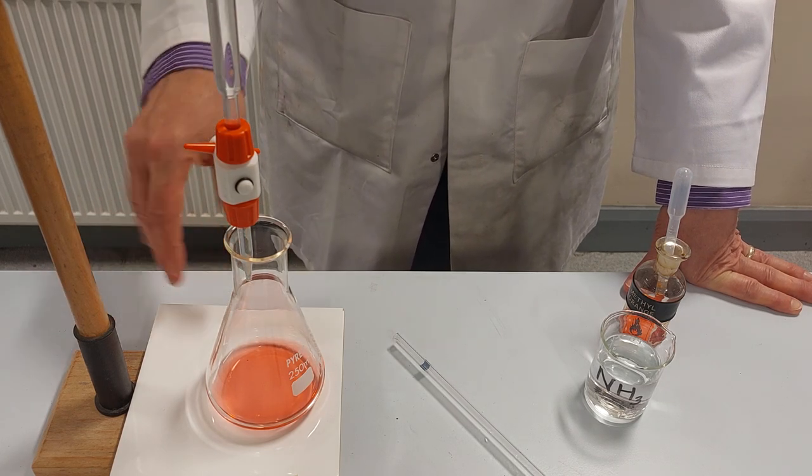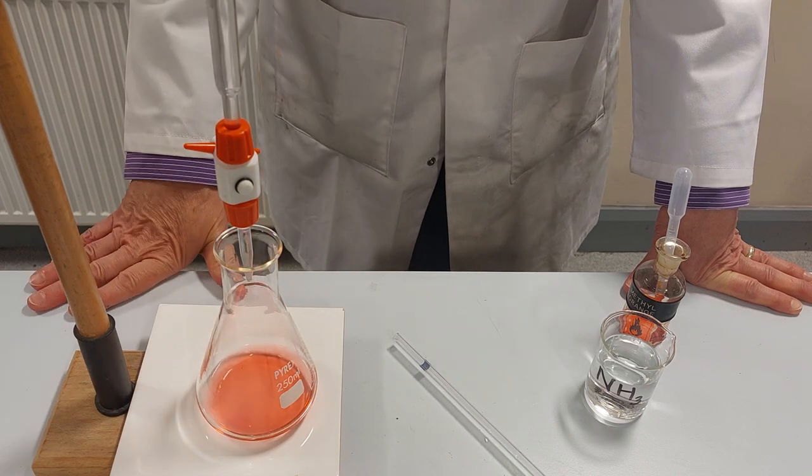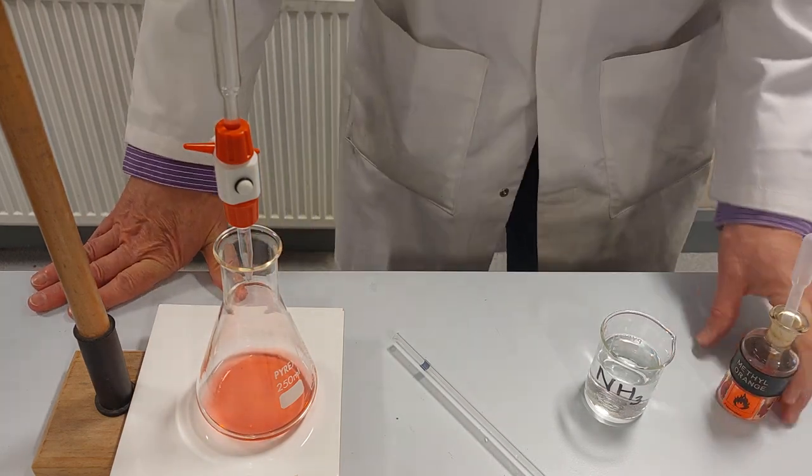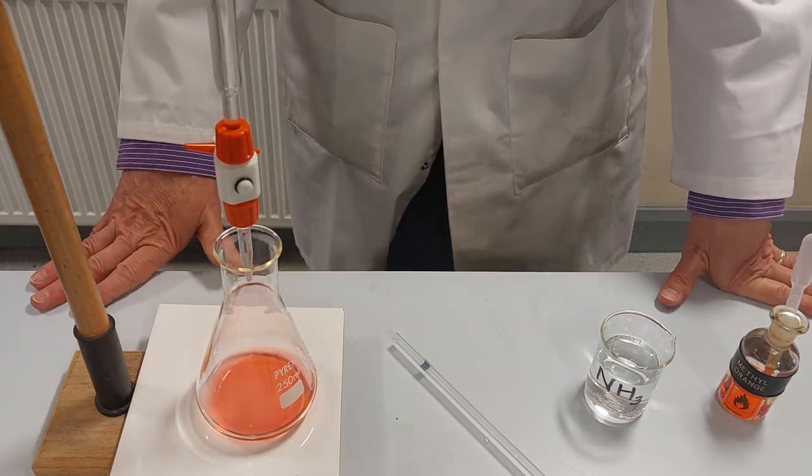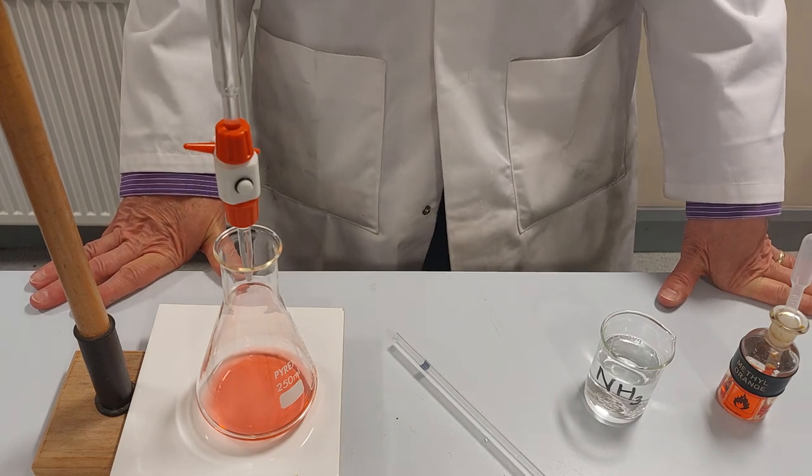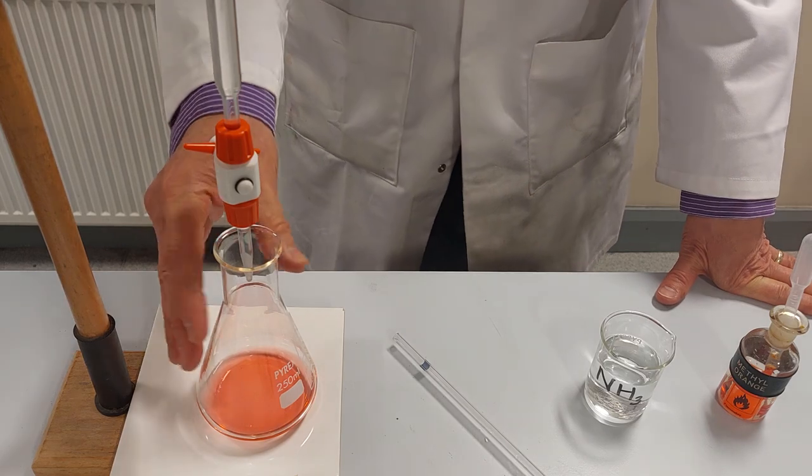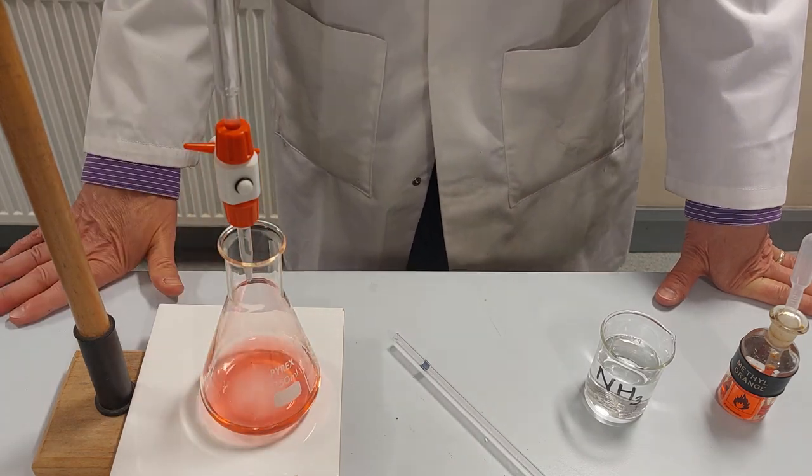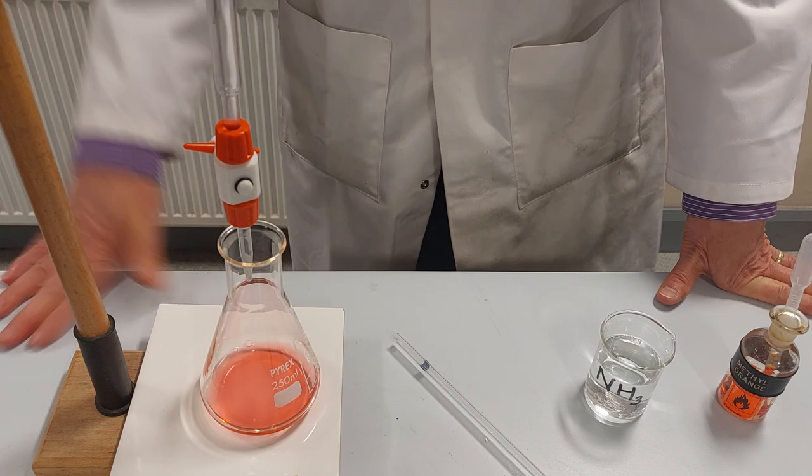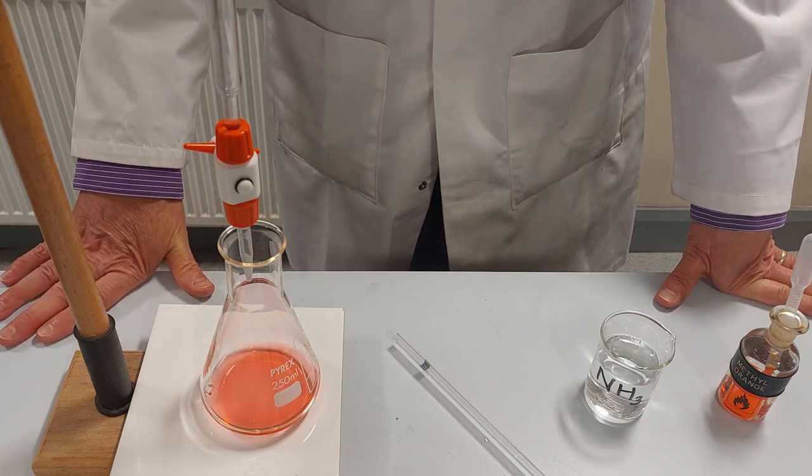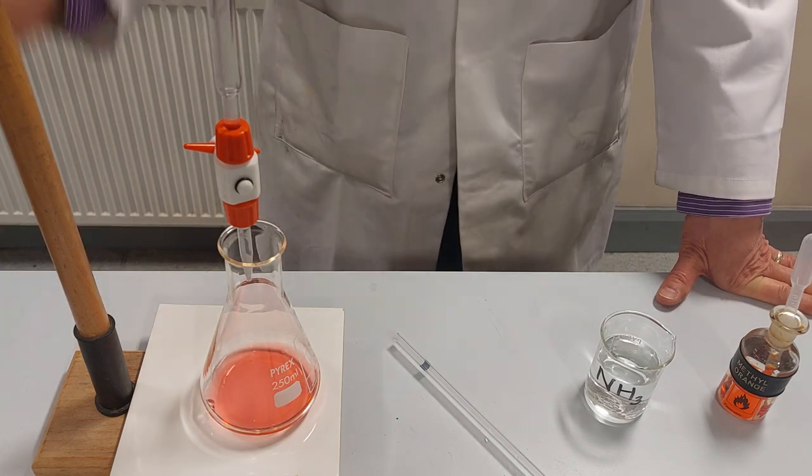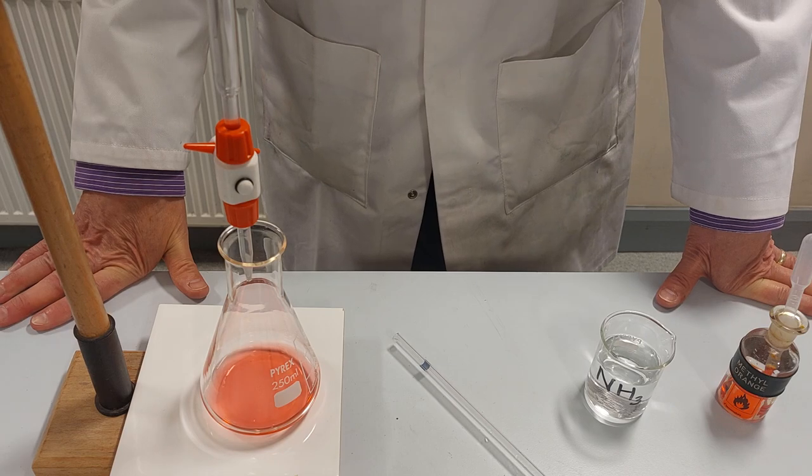That's gone after only four centimeters cubed. Okay so four centimeters cubed of acid gave me a color change there with the indicator. I thought the acid was about one mole per dm cubed but we'll find out what it is in a moment. We'll do a calculation. Okay so that's how we do a titration. I'll take a reading from the burette and that tells me the volume of acid that I've added.